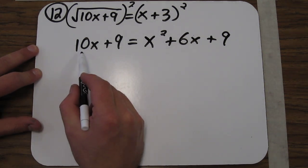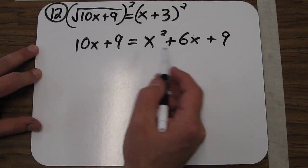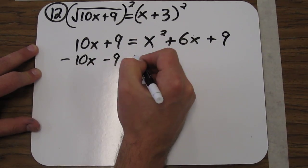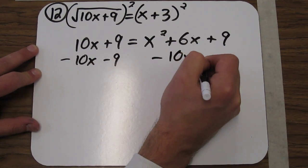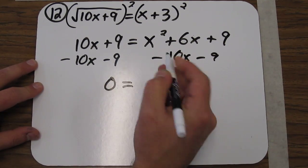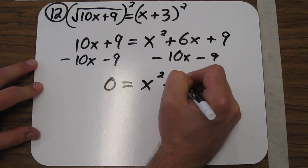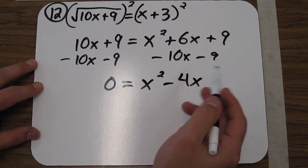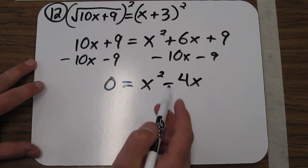Now if we subtract 10x from both sides and subtract 9 from both sides, we get 0 equals x squared minus 4x. That goes away. Now let's factor this side.